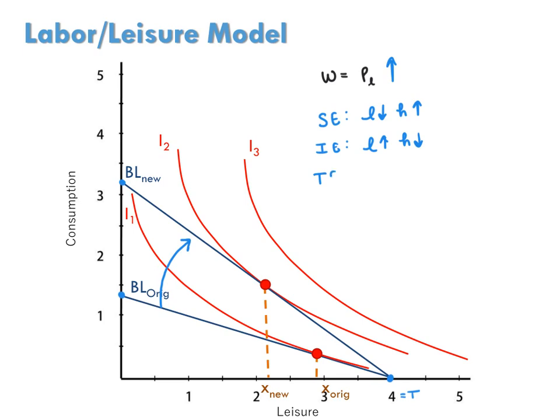What ultimately happens, or the total effect, when the price of leisure goes up, therefore depends on the magnitudes of these two effects.